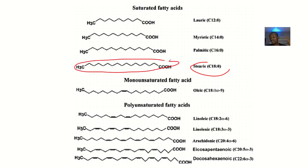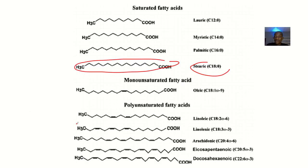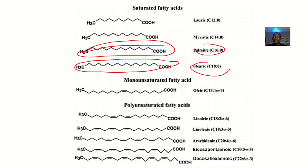Next we have palmitic acid, which is found in palm oil and meat. Here is the structural formula of palmitic acid — you can take the video back if needed.